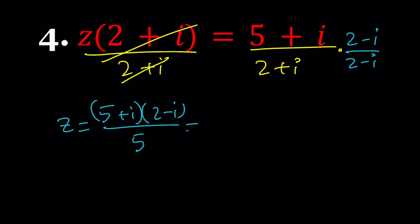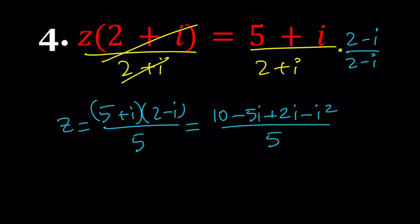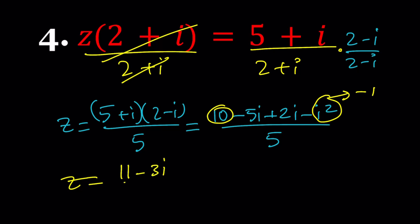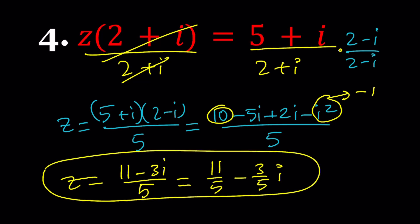Now let's simplify the numerator. That gives us 10 minus 5i plus 2i minus i squared divided by 5. Since i squared equals negative 1, negative i squared is positive 1. So 10 plus 1 equals 11, and minus 5 plus 2 gives minus 3i divided by 5. That is the answer — the value of z satisfying this equation — which you can also write in standard form.